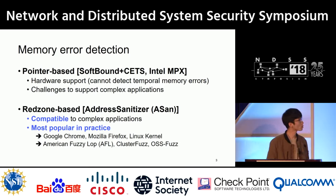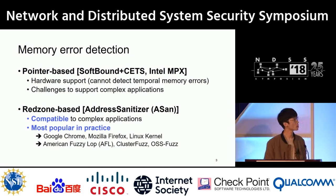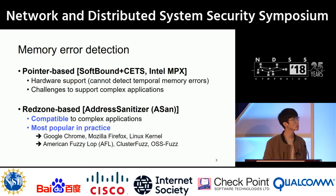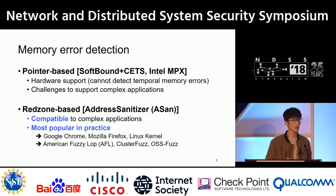Another approach is the redzone-based approach, and AddressSanitizer is the representative work. AddressSanitizer is compatible with complex applications and is most popular in practice. It can be applied to Chrome, Firefox, and the Linux kernel. Also, fuzzers like AFL, ClusterFuzz, and OSS-Fuzz utilize AddressSanitizer to find memory bugs.